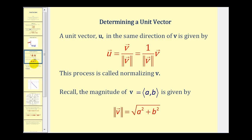To determine a unit vector u in the same direction as v, we take vector v and divide by the magnitude of vector v, or multiply vector v by one over the magnitude of v — the result is the same. This process of finding the unit vector is often called normalizing vector v. To find the magnitude of vector v in component form, we find the distance from the origin to the terminal point, which is the square root of a squared plus b squared.